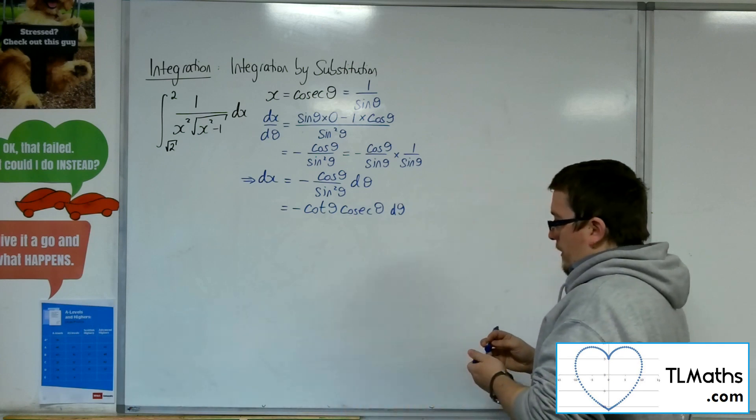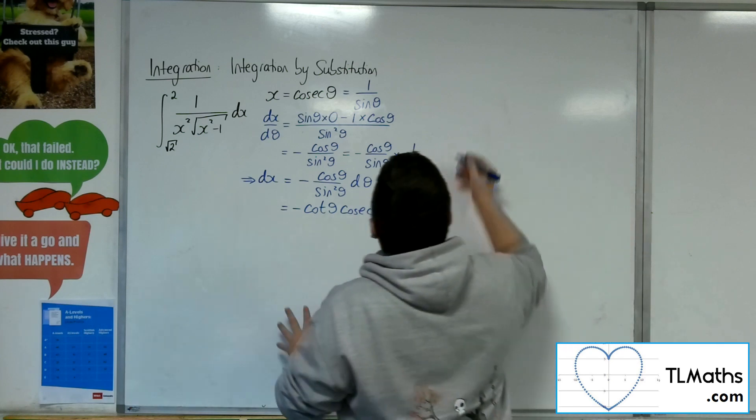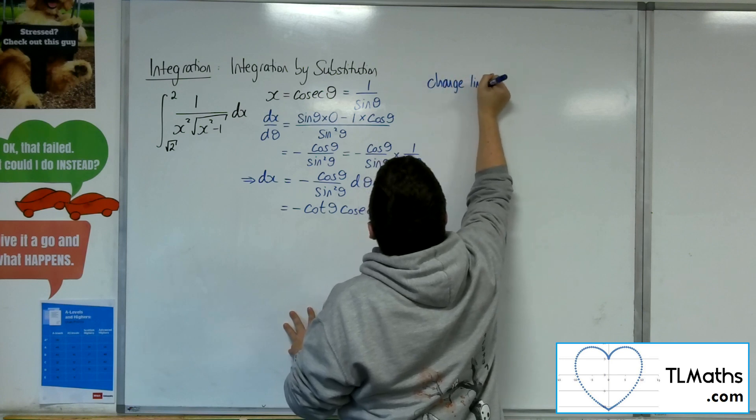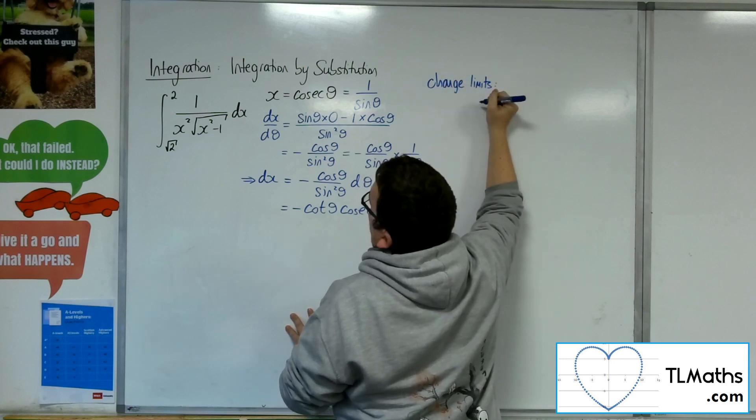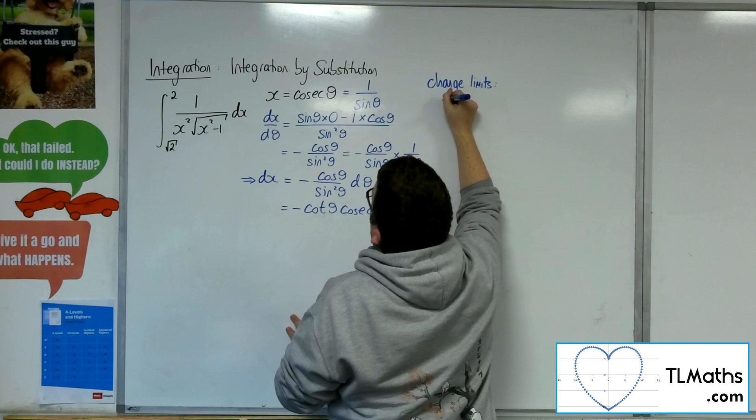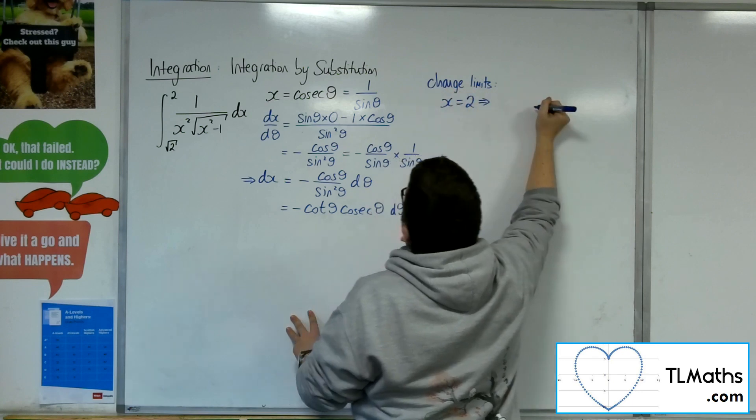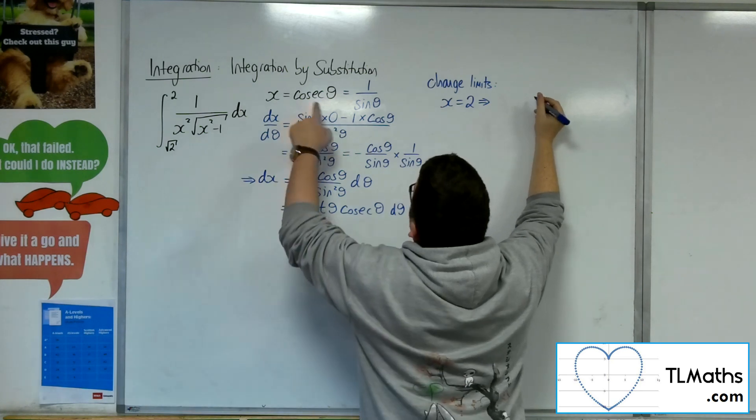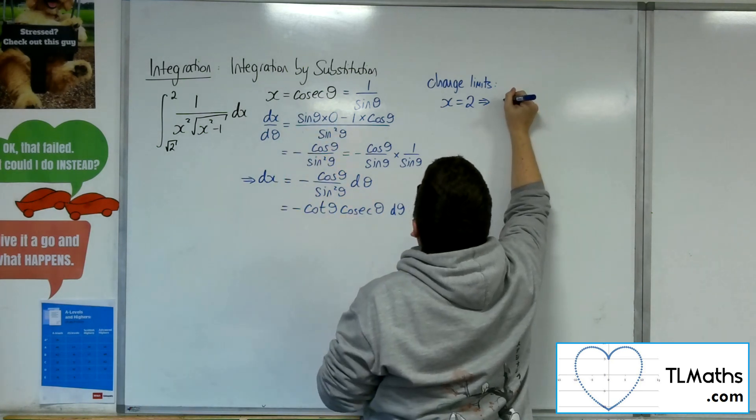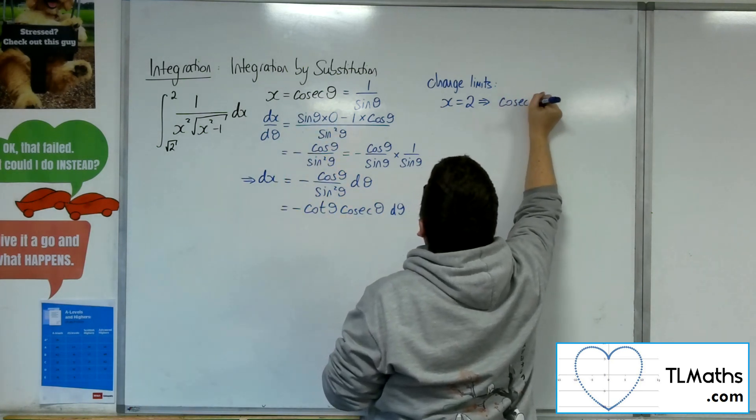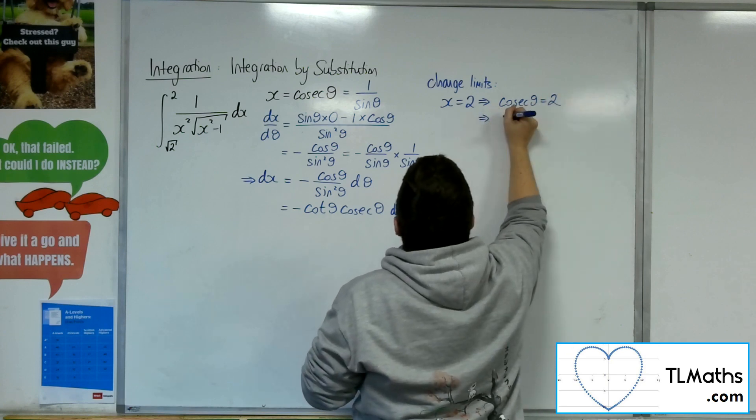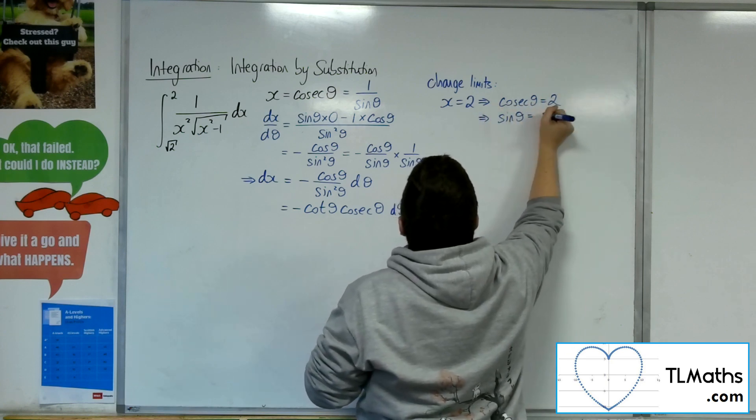Now what else do I need to do? I also need to change the limits. So I've got x equals 2, and I need to work out theta. So that means that 2 would be equal to cosec theta. So that means that sine of theta would be 1 half.